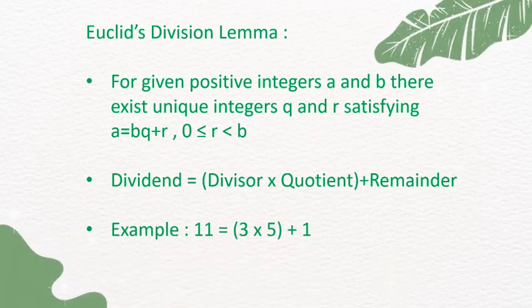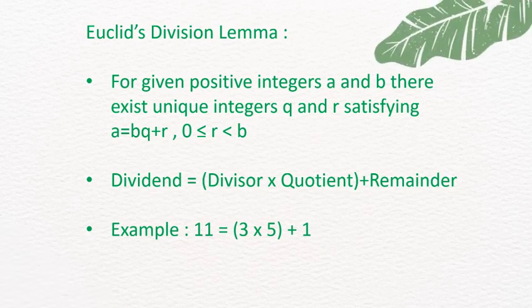That means: dividend = divisor × quotient + remainder. For example, 11 = 3 × 3 + 2, or more precisely, 11 = 3 × 5 + 1.